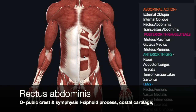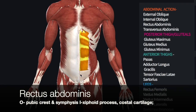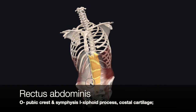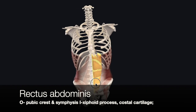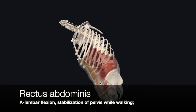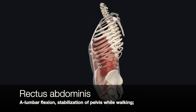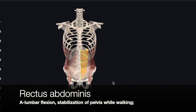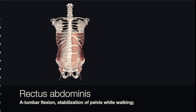The next abdominal muscle is the rectus abdominis — the one we think of when we think of a six-pack. Its origin is the pubic crest and pubic symphysis, and its insertion is the xiphoid process. Its action is flexion of the lumbar region, as well as stabilizing our pelvis while we walk.